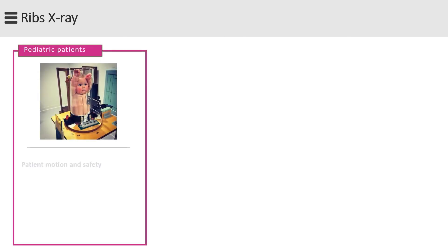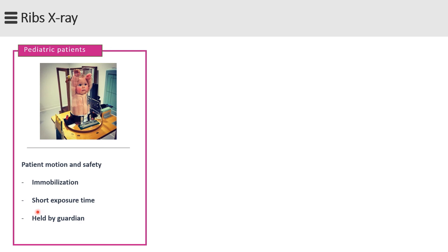Now for some final notes. Regarding pediatric patients, there are two primary concerns: patient motion and safety. A clear explanation of the procedure is required to obtain maximal trust and cooperation from both the patient and the guardian. Immobilization is of great importance to achieve proper positioning and reduce patient motion. Short exposure time with optimal mA and kV will reduce patient motion. To secure their safety, ensure that pediatric patients are voiced and cared for by a guardian.